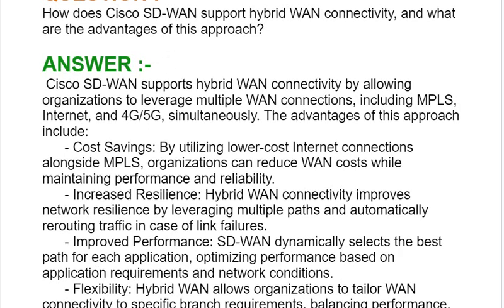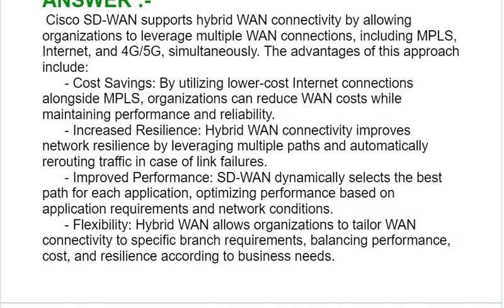Your answer should be: Cisco SD-WAN supports hybrid WAN connectivity by allowing organizations to leverage multiple WAN connections including MPLS, Internet, and 4G or 5G simultaneously. The advantages include, first, cost savings.